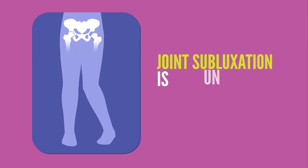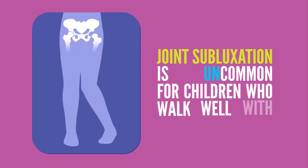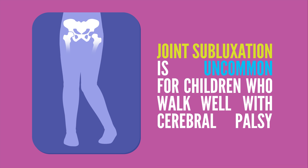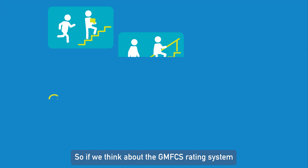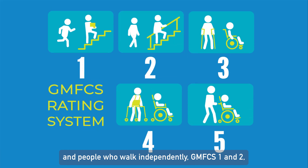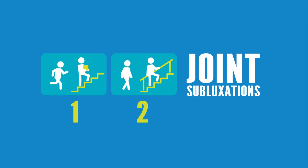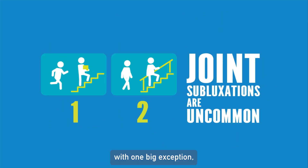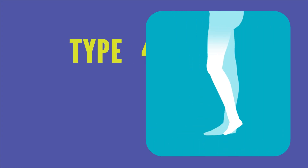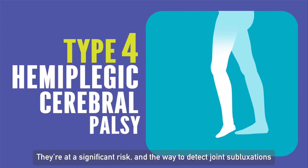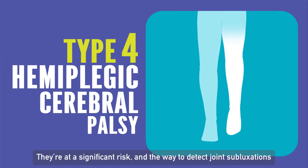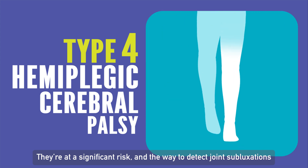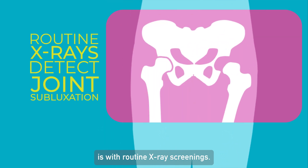Joint subluxation is quite uncommon for children who walk well with cerebral palsy. If we think about the GMFCS rating system, and people who walk at GMFCS level one and two, joint subluxations are really uncommon — with one exception: that's type 4, where they are a significant risk. The way to detect joint subluxations is with routine x-ray screening.